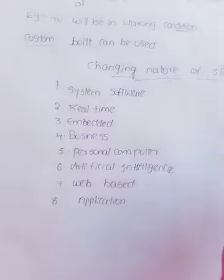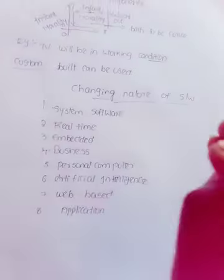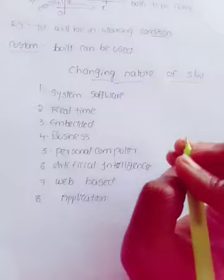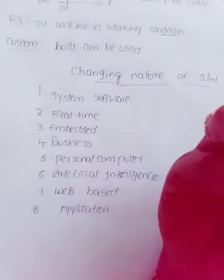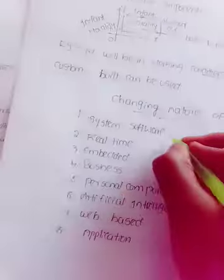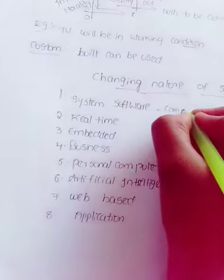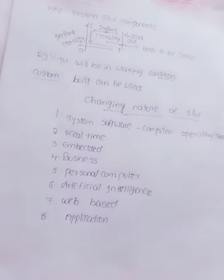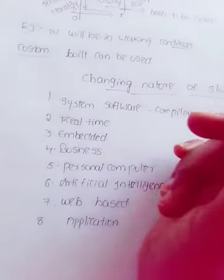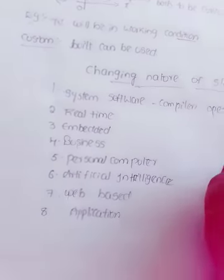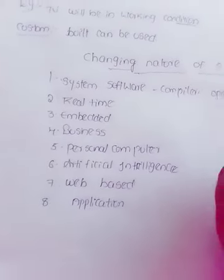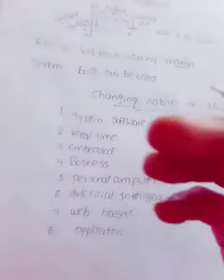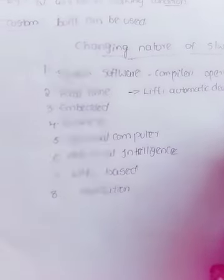System software is a collection of programs which will provide service to other programs, for example, compiler and operating system. Real-time software is continuous monitoring, like weather forecast or weather report. Embedded software is mixing one program code with another programming code.